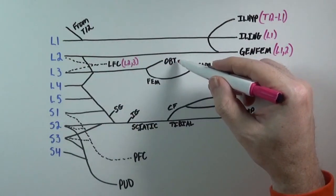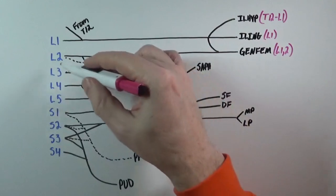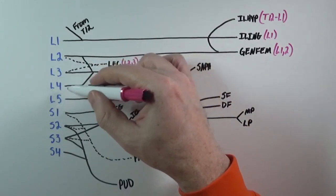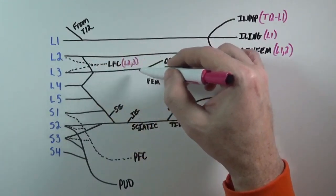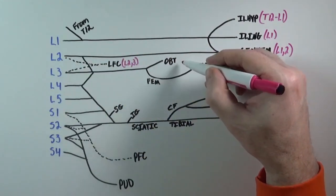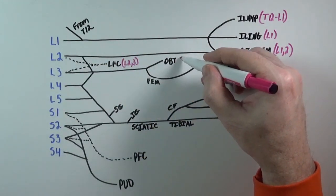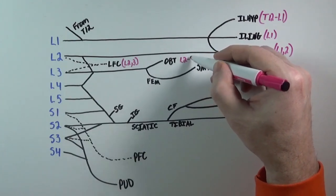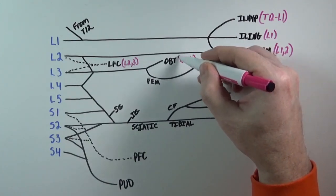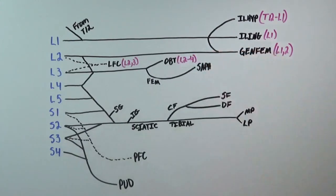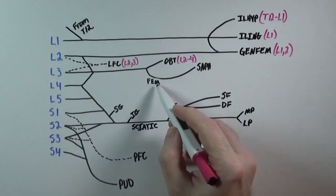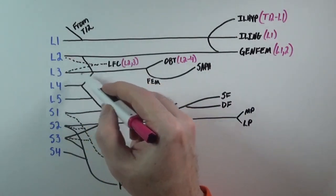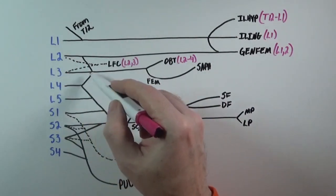When we look at the obturator nerve, we can trace it from L2, L3, and L4. The femoral nerve also comes from L2, L3, and L4.